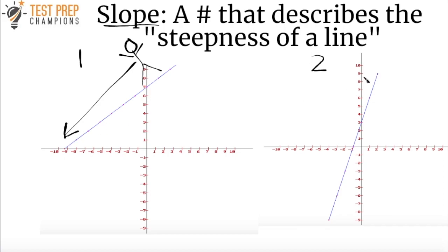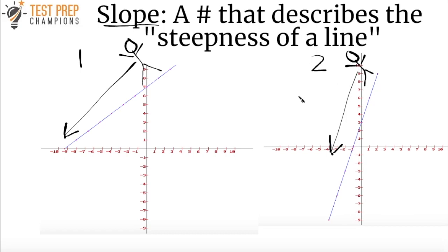Now let's look over here at graph number two. Let's shift our focus to this blue line in graph number two and again, don't worry about any of these numbers, just focus on the line. Let's say you also want to run down this hill — imagine that this blue line in graph number two is also a hill. So which hill are you going to be able to run down faster — hill number one or hill number two? Well hopefully it's pretty clear that hill number two is going to be easier to run down; you're going to run a lot faster down hill number two. Why? Because it's steeper. We can see that this line in graph number two is much steeper than the line in graph number one.